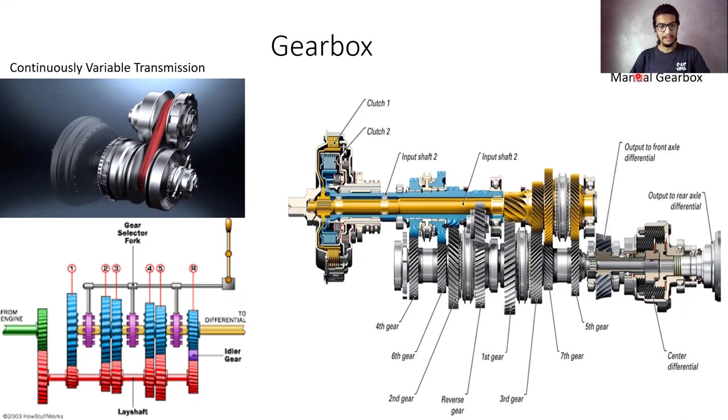There are various types of gearbox in a car, mainly the manual gearbox, the diagram for which is shown here, and the continuously variable transmission, that is CVT. Now, I will be talking about the manual gearbox. This golden shaft here gets the input power from the engine, and here at the end, the silver shaft gives the output power. In the manual gearbox, there are various combinations of gears as you can see.